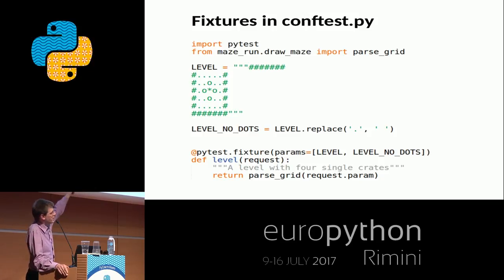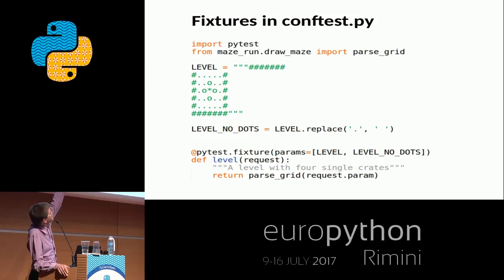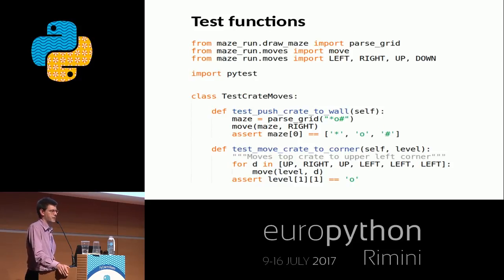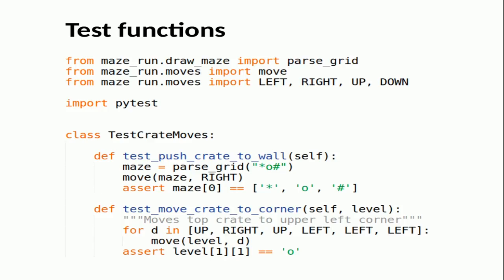I did something additional here — I parameterized the test. There are two versions of the playing field supplied: one with empty spaces and one with dots. So I can have two fixtures or more in one by parametrization. Then we can use this in a test function. I like to group my test functions into classes. With PyTest this is a lot easier than it used to be with unittest — less boilerplate code. I can write a normal test function with just an assertion, or use the level parameter, which gets automatically filled in by PyTest. This test function will generate two tests — one for each variant in the fixture.